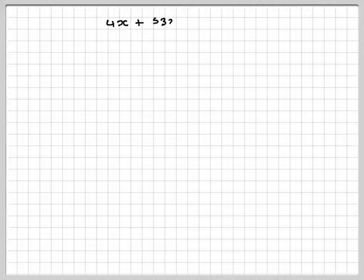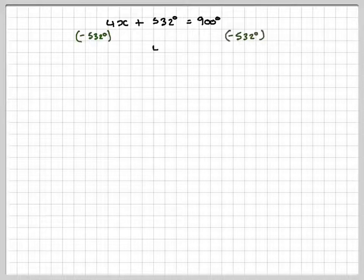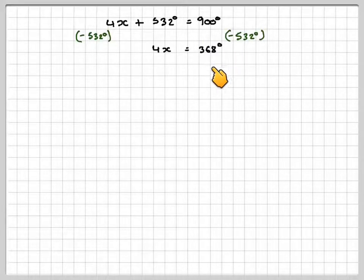Right, so taking that forward, obviously this is an equation, so subtracting 532 from both sides we're going to get 4x, and then 900 minus that gives you 368.